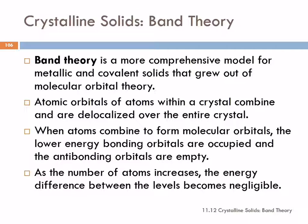We're switching gears a bit here — band theory. Molecular orbital theory, which we have talked about, led to the development of band theory, which is a more comprehensive model for metallic and covalent solids. With molecular orbital theory, the orbitals are delocalized over the entire molecule instead of just being localized between the two atoms, and that explained a lot of things that valence bond theory and Lewis theory couldn't explain.